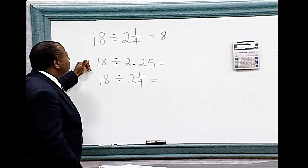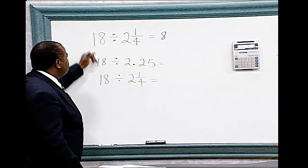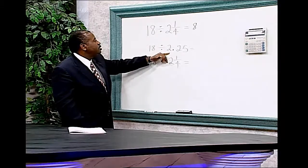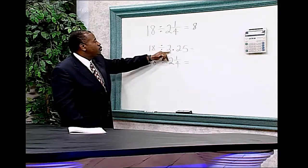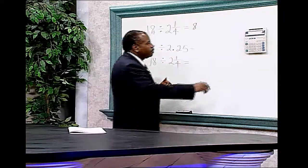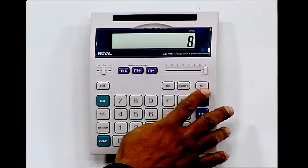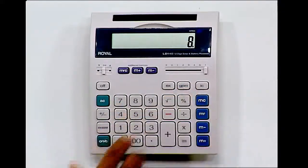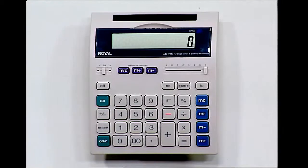18 divided by 2 and 1/4 on the fraction decimal chart is equivalent to 2.25. You must always clear the memory of the calculator before you start another problem. 18 divided by 2.25 equals 8.